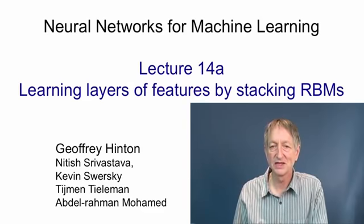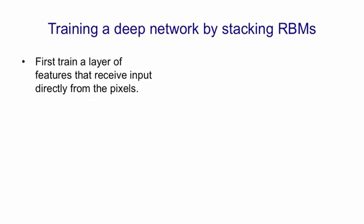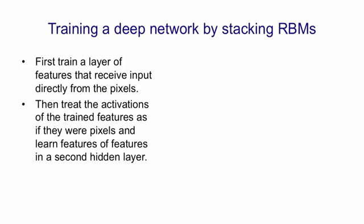It was very surprising to me that we'd actually solved the problem of how to learn deep sigmoid belief nets by giving up on it and focusing on learning undirected models like Boltzmann machines. Using the efficient learning algorithm for restricted Boltzmann machines, it's easy to train a layer of features that receive input directly from the pixels. We can then treat the patterns of activation of those feature detectors as if they were pixels and learn another layer of features in a second hidden layer. We can repeat this as many times as we like, with each new layer modeling the correlated activity in the features in the layer below.